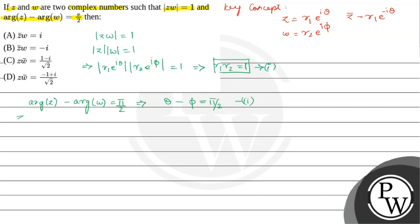Z bar into W is equals to R1 e power minus i theta into R2 e power i phi, which is equals to R1 R2 e power minus i into theta minus phi.